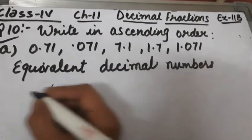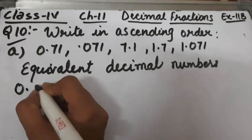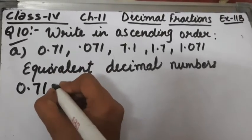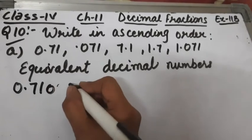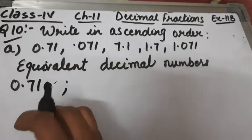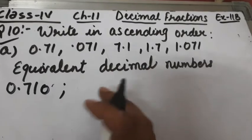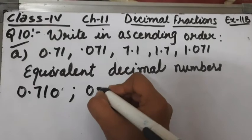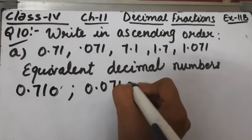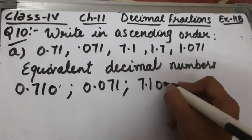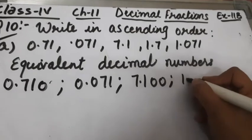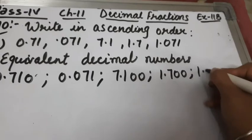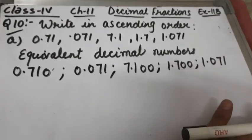The maximum number of digits after the decimal is three, so we will make all the decimal fractions have three digits after the decimal. Here we have 0.71, so put one zero to make it three digits: 0.710. A zero after the decimal does not change the value. Similarly, 7.1 becomes 7.100, 1.7 becomes 1.700, and 1.071 stays as 1.071. These are the equivalent decimal numbers.